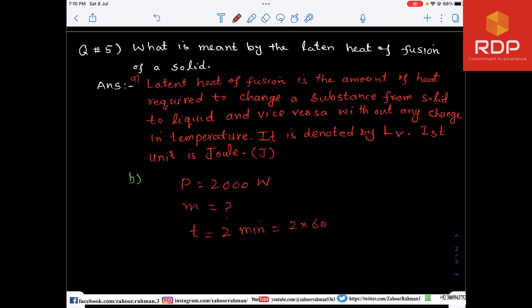Two minutes means we have to convert it to seconds, so we multiply by 60 — two minutes means 120 seconds. Also, assume that the specific latent heat of fusion of the solid is L_V equals 95,000 joules per kilogram. These are the given values.